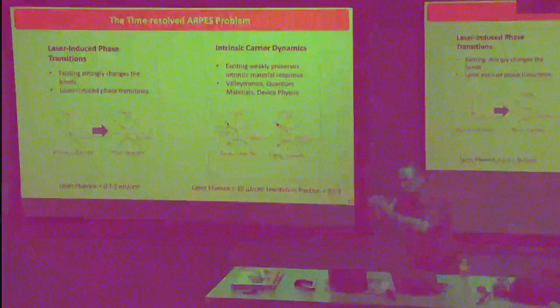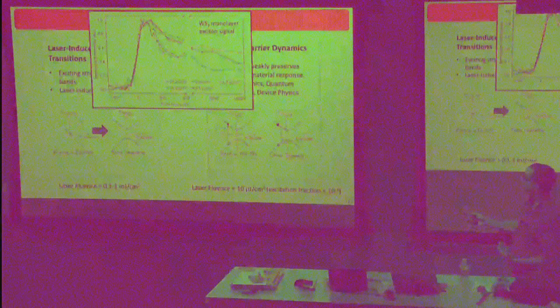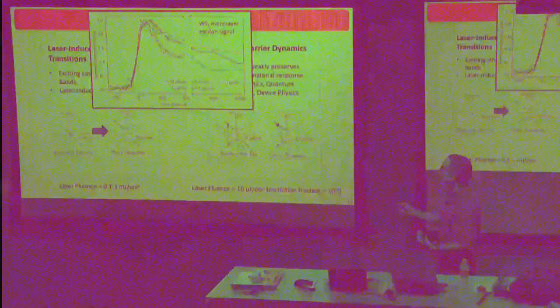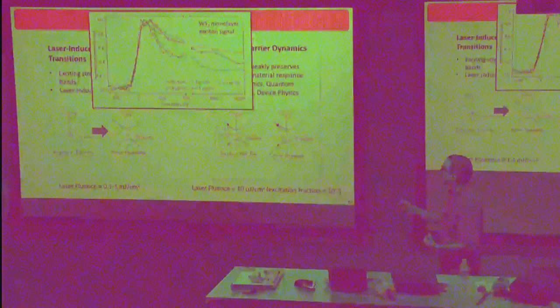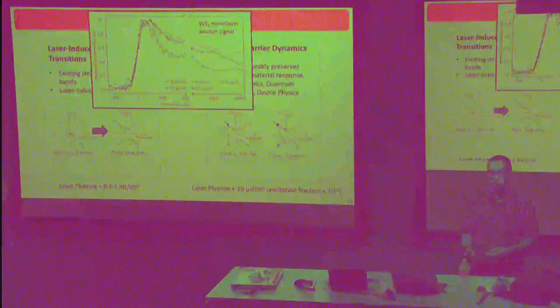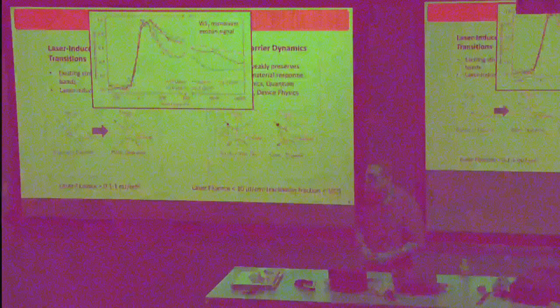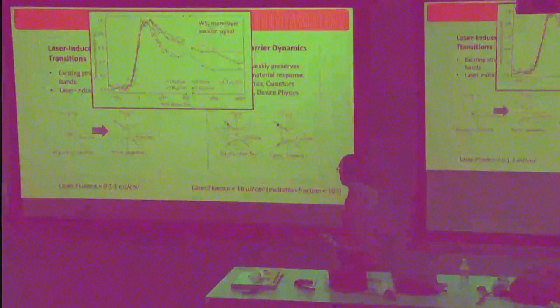Here's an example from tungsten disulfide — our data — showing pump-probe traces at different excitation fluences. At 5 μJ/cm² versus 1.3 μJ/cm², once you get to 10 the dynamics are different because now you basically have excitons bouncing off each other rather than seeing the intrinsic material dynamics. This is orders of magnitude lower excitation than people have been able to achieve before.